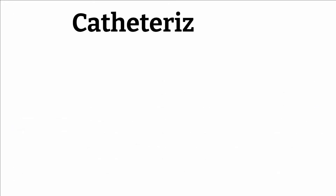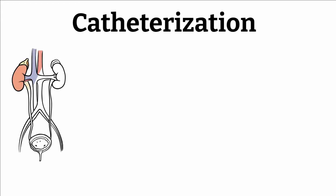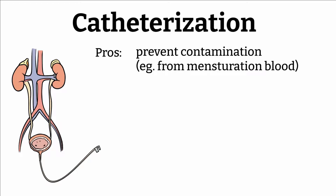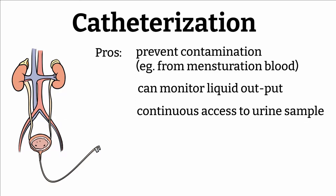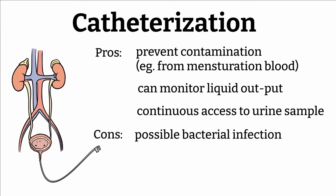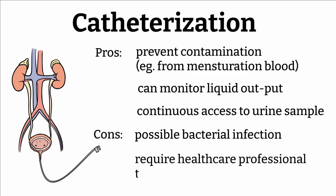Up next is urine collected by catheterization. This is usually done with patients who have difficulty voiding themselves, and is sometimes used for female patients to avoid contamination such as menstrual blood. Another benefit is that, once inserted, we can monitor the patient's urine output and have continuous access to urine samples. However, inserting the catheter could introduce bacteria and cause infection if not done properly, so catheterization is not routinely used.